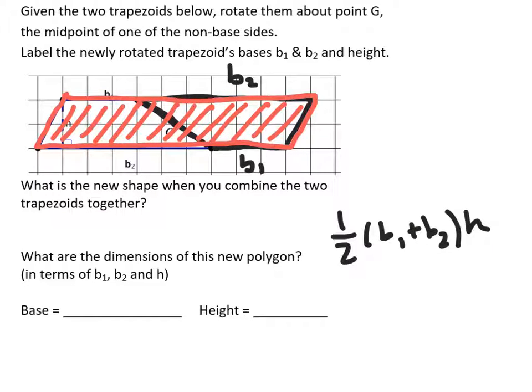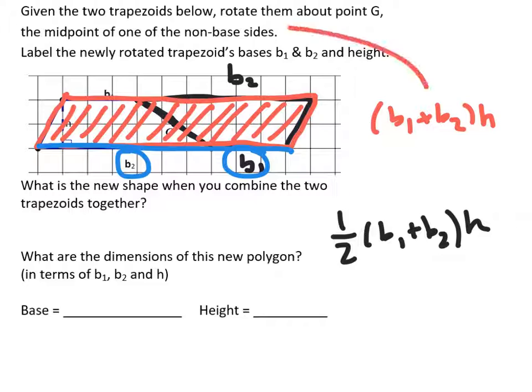Now you know the area of a parallelogram. That's its base times its height. Now in this case, the base is B1 and B2. Can you see that we've added those two items together to get the base. And the height is just H. And so that would be the area. This would be the area of this parallelogram.